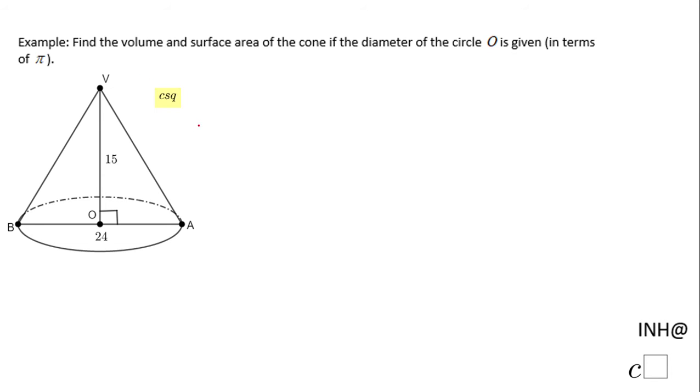Welcome back to NHC Square. In this example, you need to find the volume and the surface area of this cone. What is given to us is the diameter, which is 24.